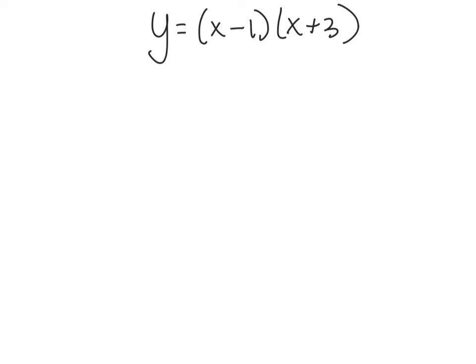All right do you see this equation y equals x minus 1 times x plus 3. Notice this looks like it has been factored so therefore it is in intercept form. So the first thing I'm going to do is I'm actually going to find my x-intercepts and I know that my x-intercepts are the two points